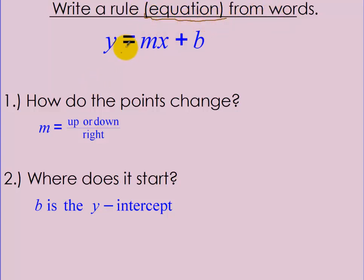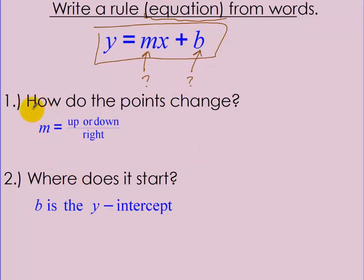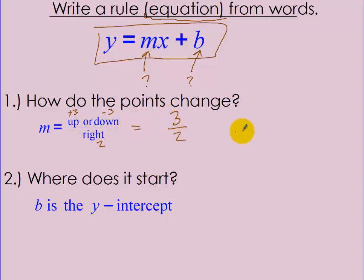We use that information to actually write a rule from the words. A rule or equation is going to be in the form y equals mx plus b. We plug in a value for m and a value for b. For m, which tells us how the points change, m is going to be a fraction. On the top you put how much you're going up or down — if you go up 3, you put positive 3; if you go down 3, you put negative 3. On the bottom, you put how many units you went to the right. So if you went 2 units to the right, you write 2 there, giving a fraction like 3 over 2.